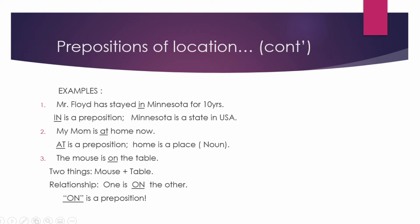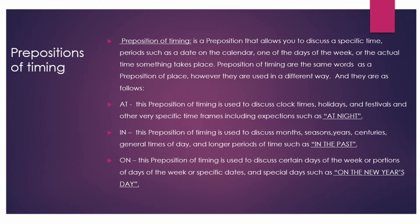Now let's move to preposition of timing. Preposition of timing is a preposition that allows you to discuss specific time periods such as a date on the calendar, one of the days of the week, and the actual time something takes place. Prepositions of timing are the same words as prepositions of place, however they are used in different ways.